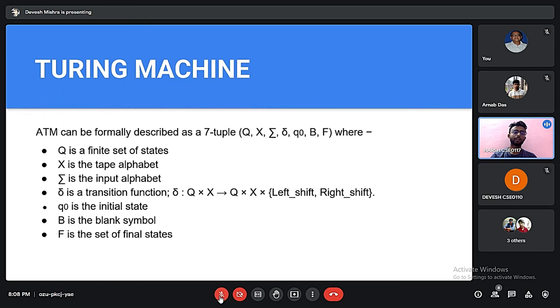A Turing machine can be formally described as a 7-tuple: Q is a finite set of states, X is the tape alphabet, Sigma is the input alphabet, Delta is the transition function, q0 is the initial state, B is the blank symbol, and F is the set of final states.